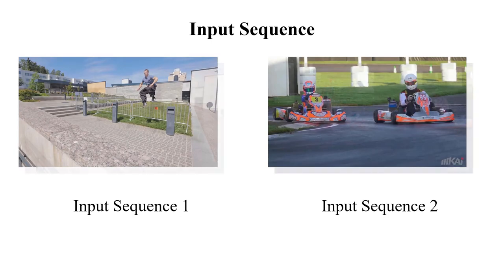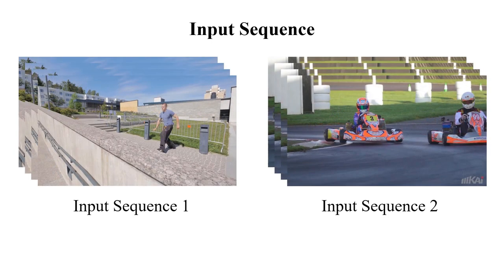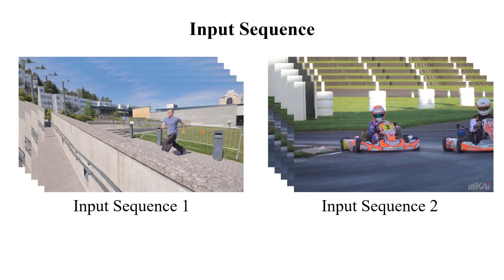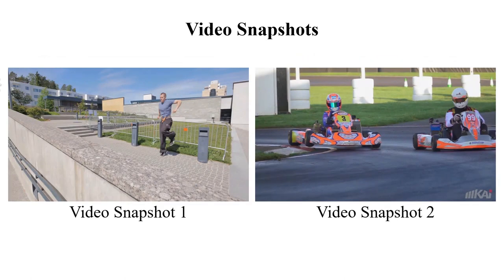Now we show you some results. Here are two input sequences. Here are two video snapshots generated by the motion embedding network. Regular patterns are introduced into the image for information embedding.